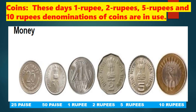We have been using 25 paise coins, 50 paise coins, 1 rupee coins, 2 rupee coins, and 5 rupee coins. These days, 1 rupee, 2 rupee, 5 rupee, and 10 rupee denominations of coins are in use.